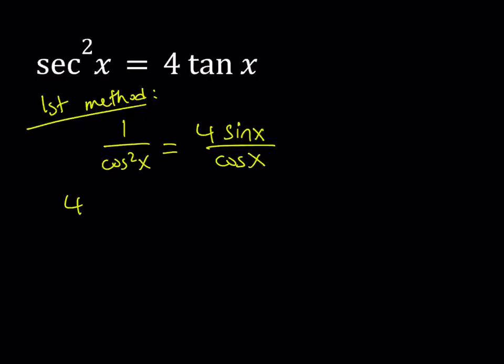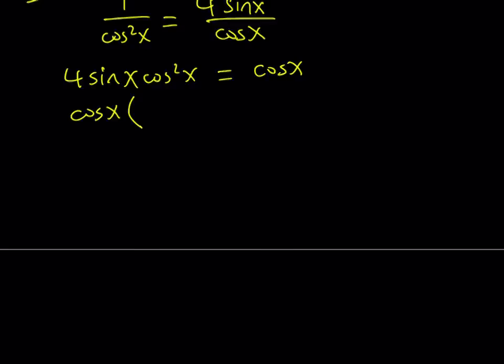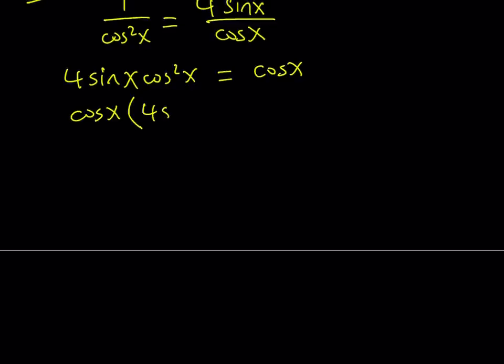So when I cross multiply, I'm going to be getting 4 sine x cosine squared x equals cosine x. Again, we're not canceling out anything, but putting everything on the same side would be a good idea. And then we can take out cosine x, which is a common factor that gives us 4 sine x cosine x and then minus 1 for cosine x. And the whole thing equals 0.